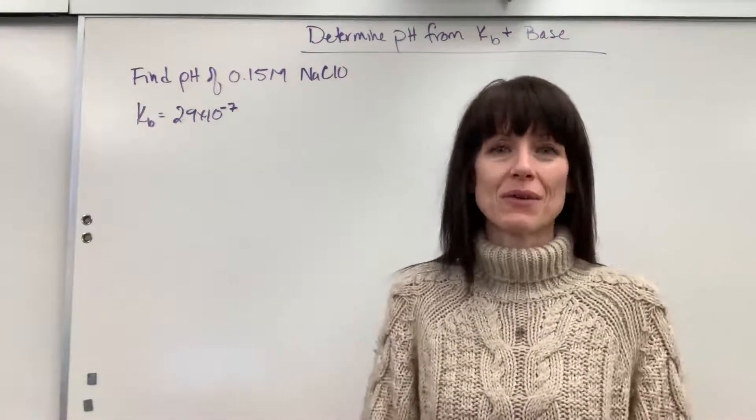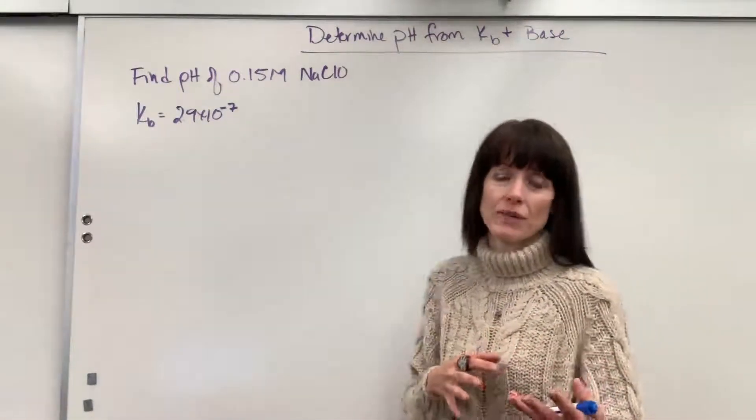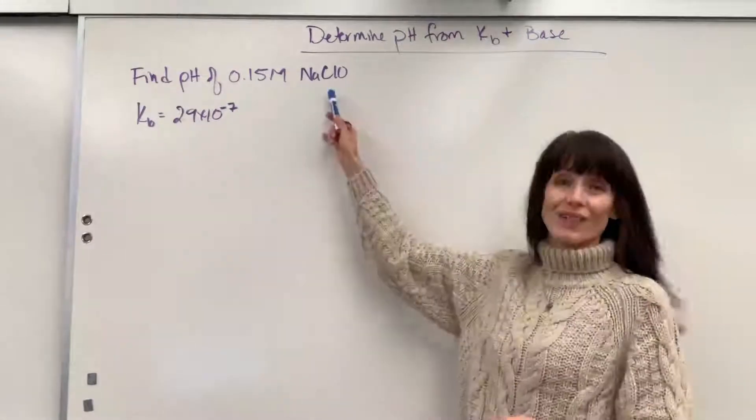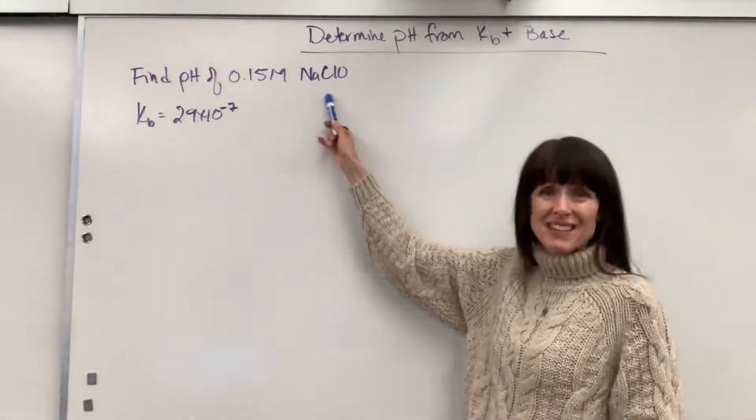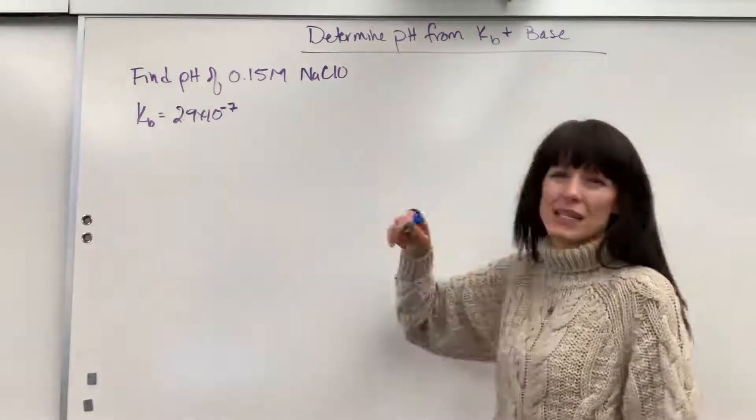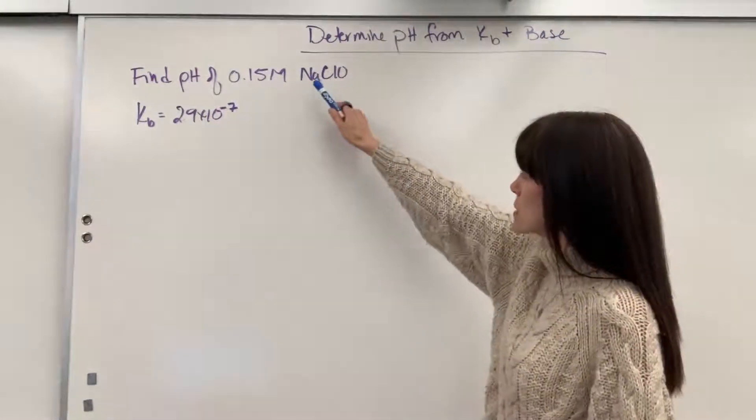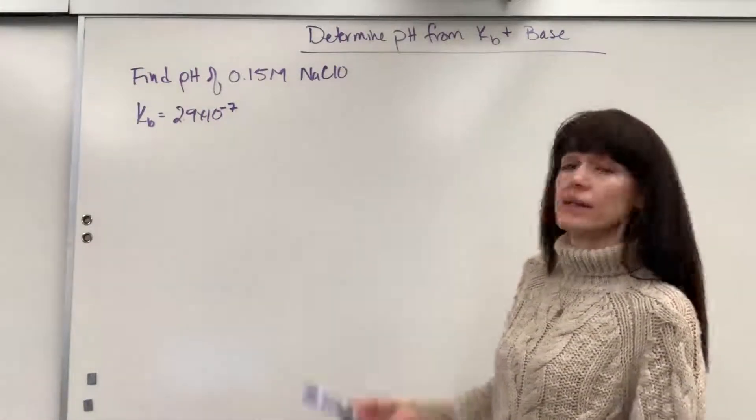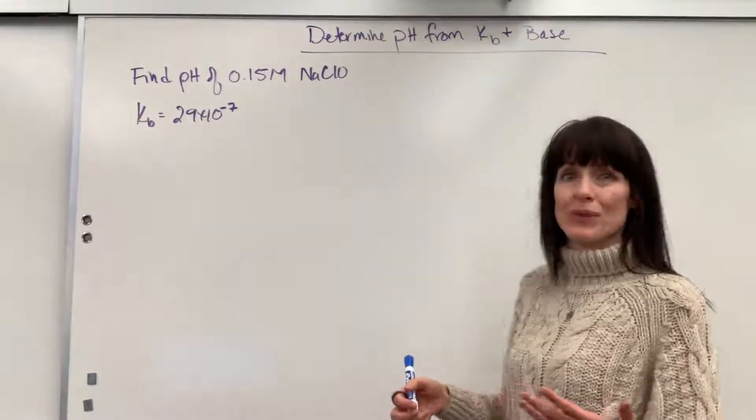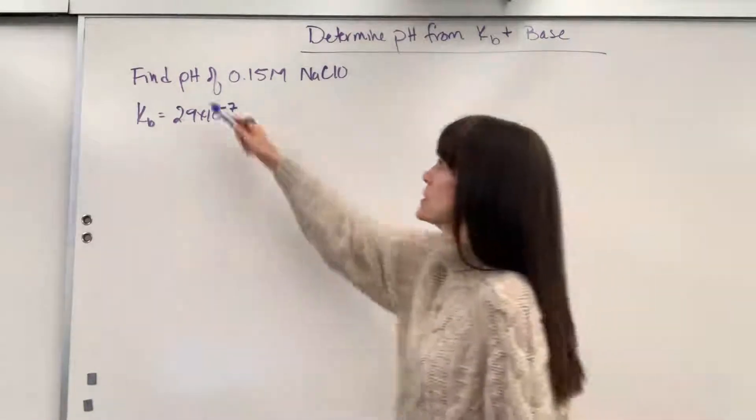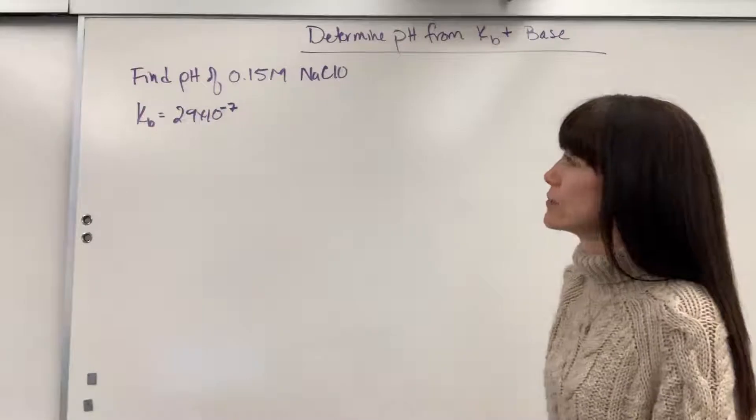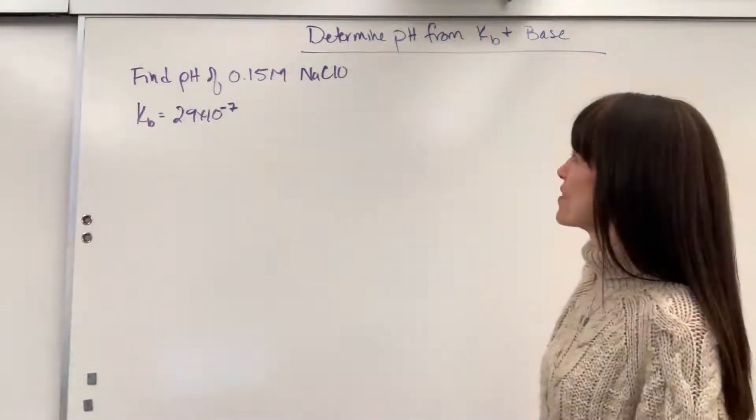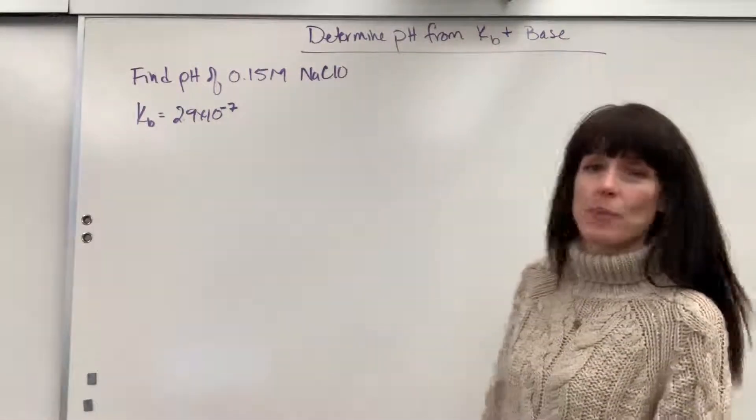Let's say that we start with a base. Typically when you have to start with a base, you'll be given a salt. This is bleach, sodium hypochlorite, common bleach that you and I use to keep all of our socks white. Here's the question: let's find the pH of a 0.15 molar sodium hypochlorite.